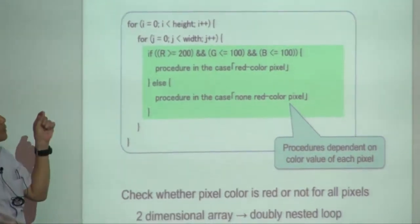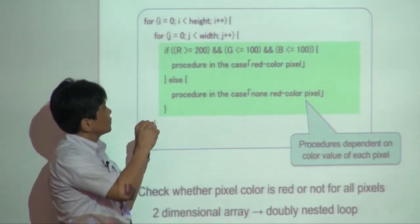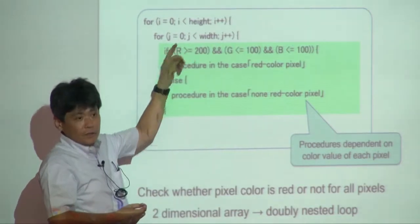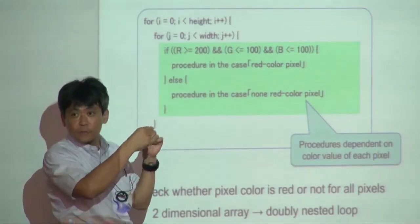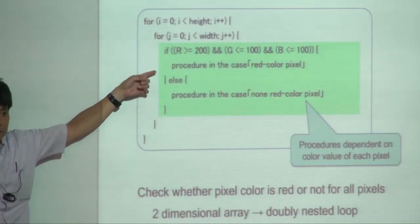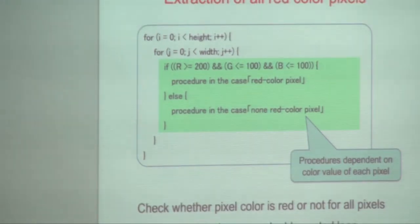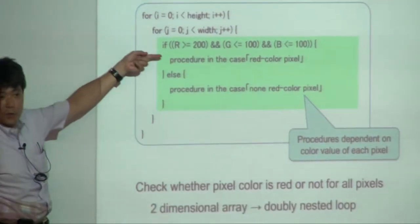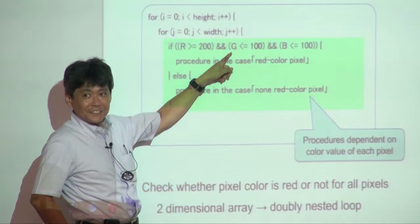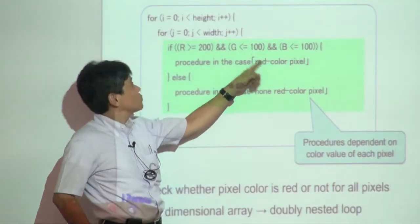Variables I and J correspond to the position in the image data. I is the vertical location and J corresponds to the horizontal position. Actually, this is not a complete program — you have to use I and J as indices. R, G, B should be specified by I and J.